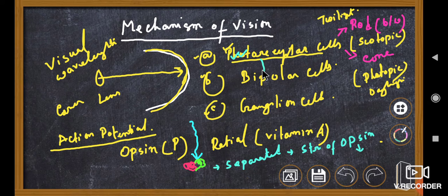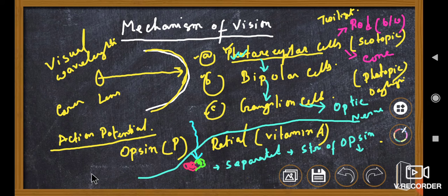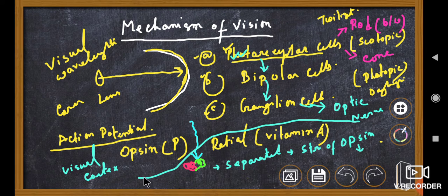When the membrane potential changes, an action potential is generated. This action potential is transmitted through the bipolar cells, which depolarize and transmit the signal to the ganglion cells. The ganglion cells are the innermost layer of the retina, connected to the optic nerve. The optic nerve carries the signal — the action potential — up to the visual cortex of the brain, which is responsible for analyzing the visual signals arriving from the retina.